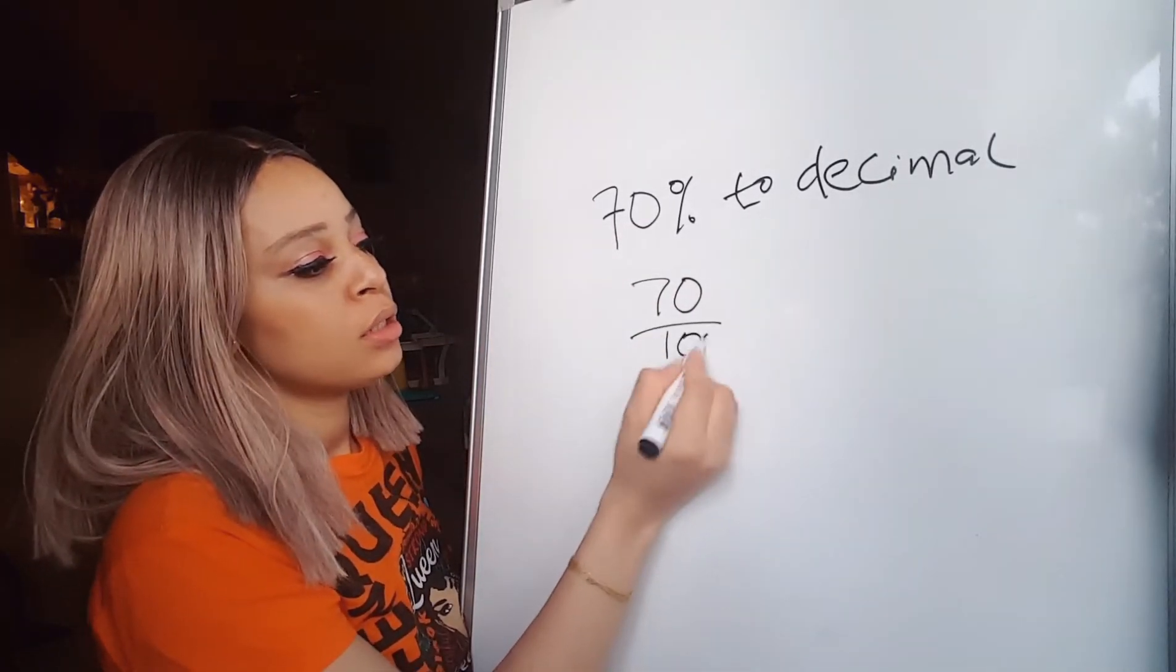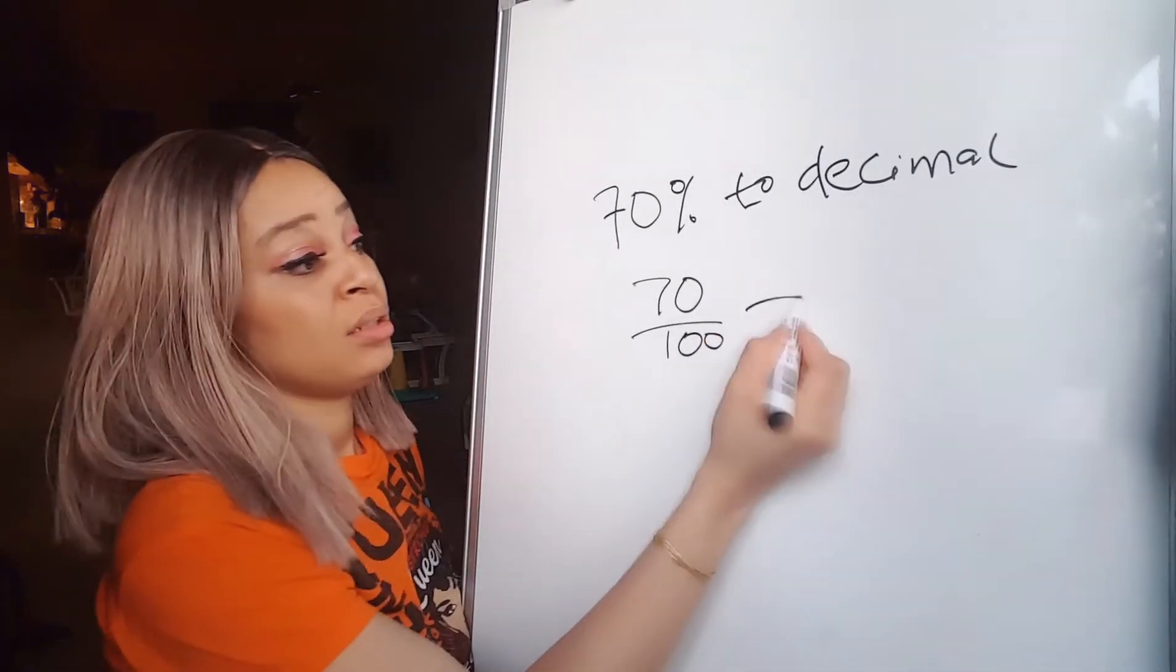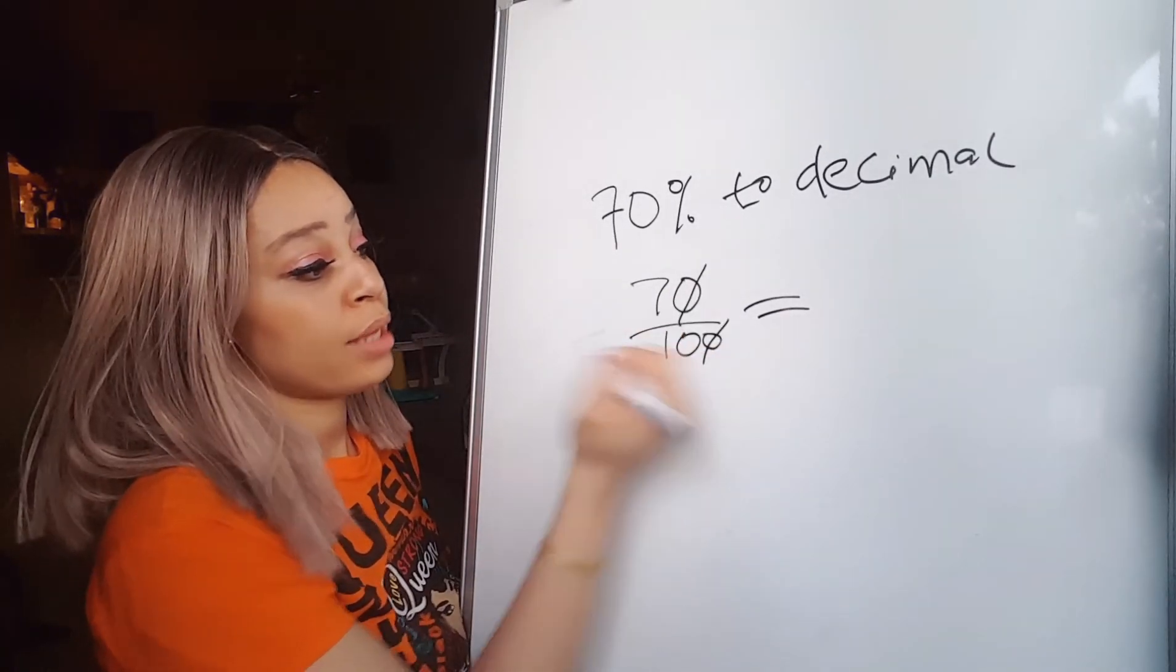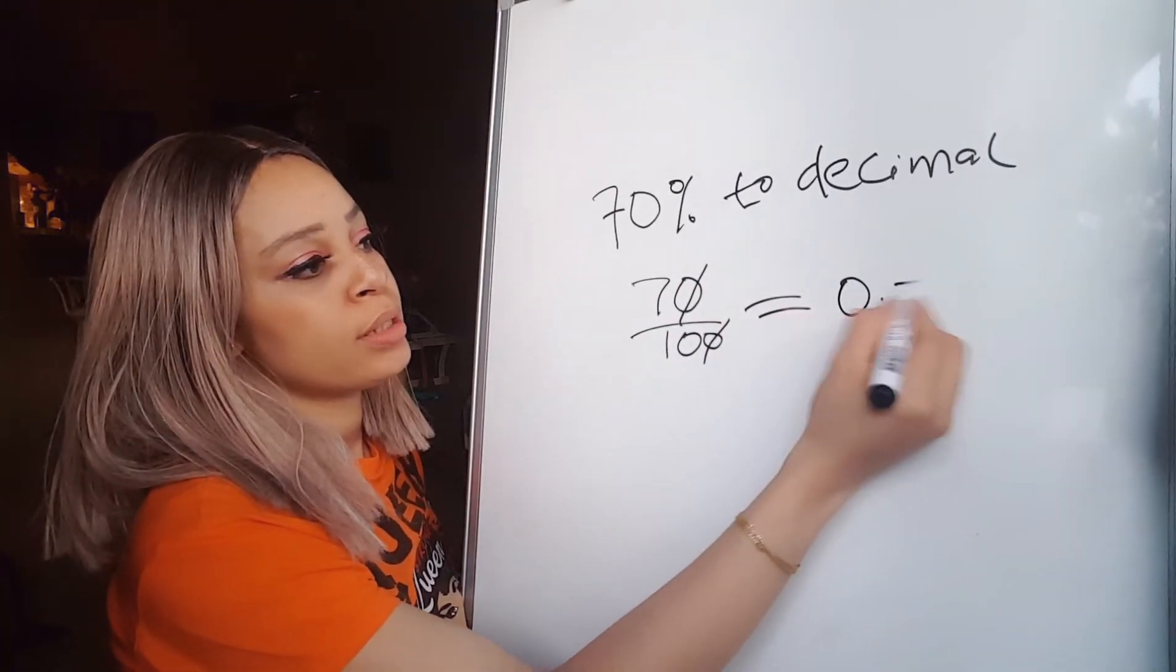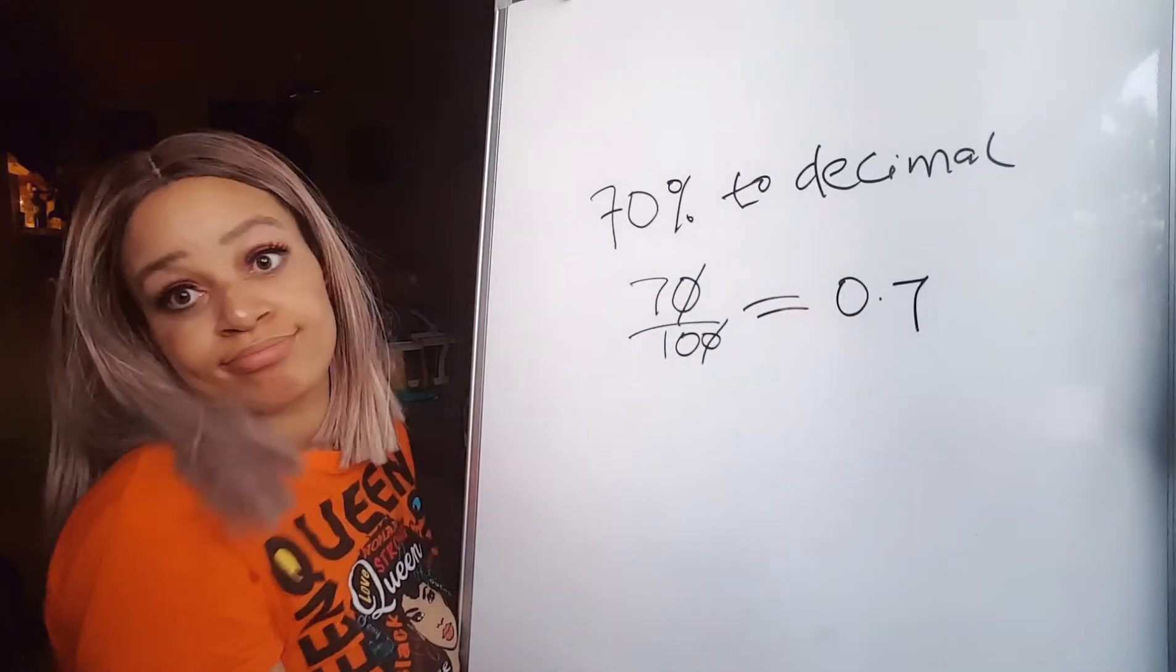Yeah, so all you gotta do is instead of multiplying with 100, you divide. Yeah, 70 percent means 70 over 100, right? Over 100, that's it. Cancel, cancel. 7 over 10 will give you 0.7, that's it.